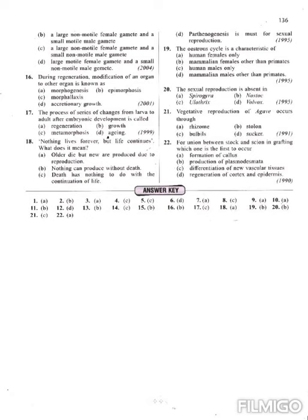Question 19: the estrous cycle is a characteristic of mammalian females other than primates. Cat, dog, and cow are examples that show the estrous cycle. This estrous cycle is seasonal.